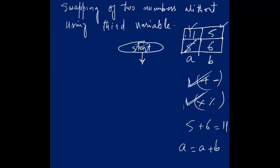Now again, this A will be again updated. This A will be equal to A minus B: 11 minus 5, that is equal to 6. Originally it was 5 and 6. Now it is 6 and 5. This is the way we are using.